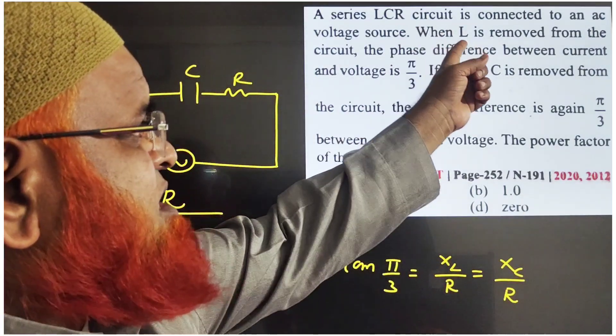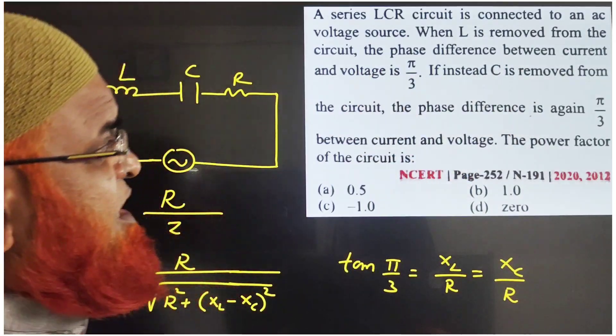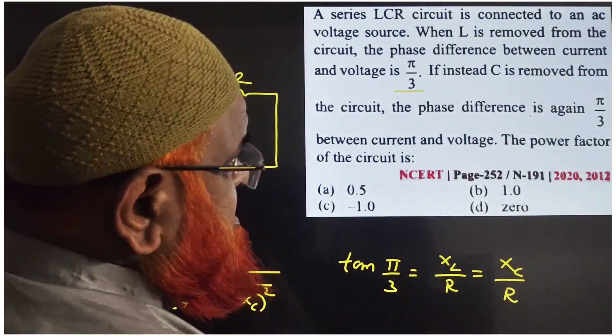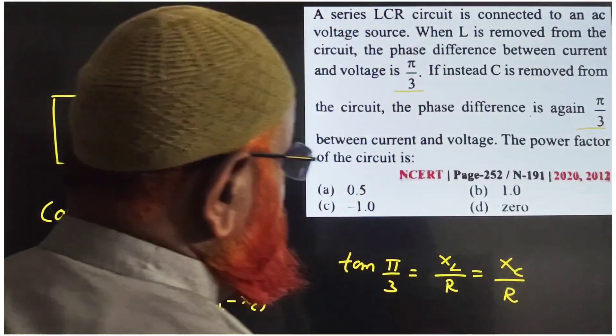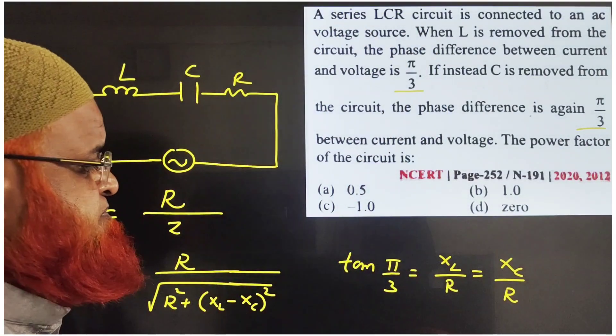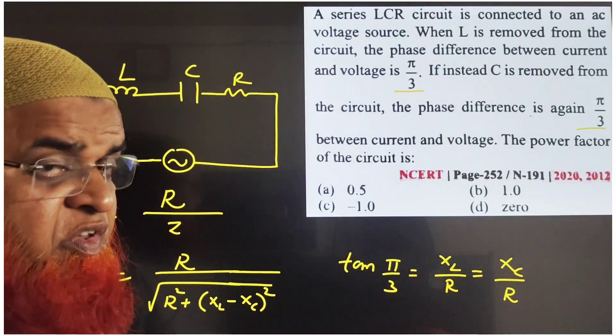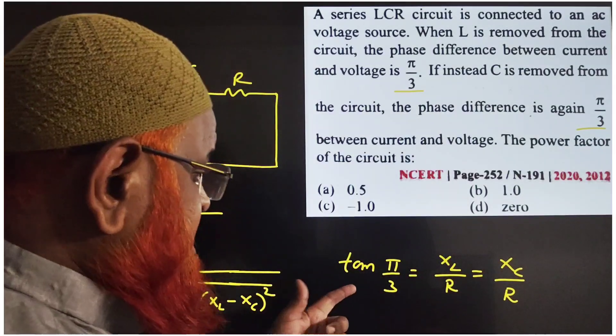So in an LCR circuit, what do you say? When L is removed from the circuit, phase difference is π/3. When C is removed from the circuit, again phase difference is π/3. I mean, phase difference is same.